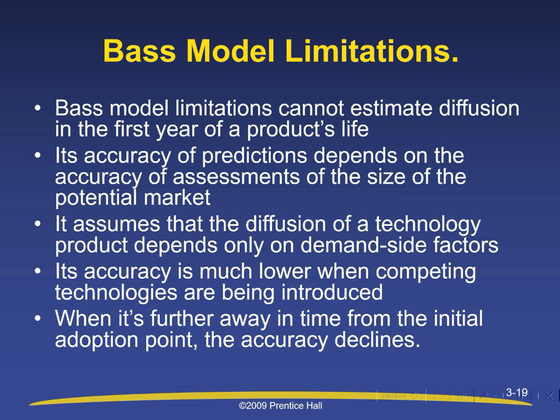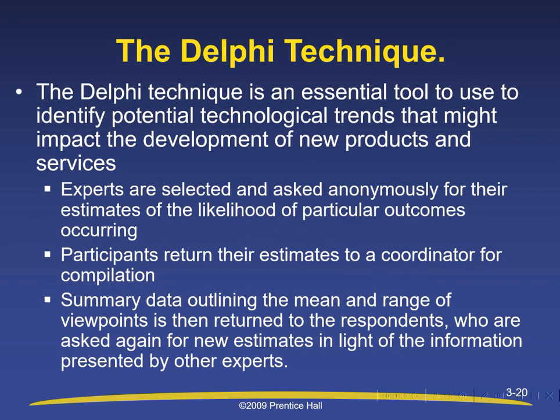The Delphi technique is an essential tool for identifying potential technological trends that might impact the development of new products and services. Experts are selected and asked anonymously for their estimates of the likelihood of particular outcomes occurring. Participants return their estimates to a coordinator for compilation, and summary data outlining the mean and range of viewpoints is returned to respondents, who are asked again for new estimates in light of information presented by other experts.